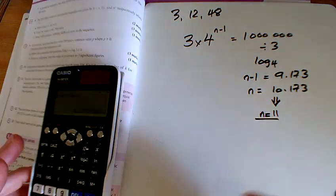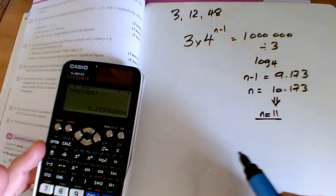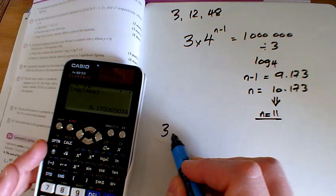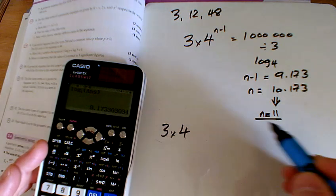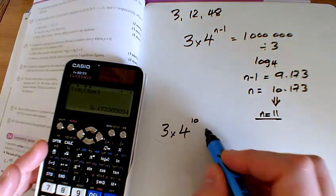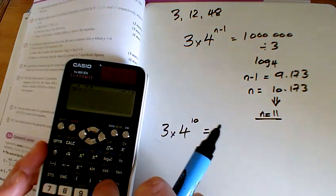And the question doesn't actually ask you what one it will be, it's going to say, what is this value? So we're going to do 3 times 4 to the power of 11 minus 1. So 3 times...